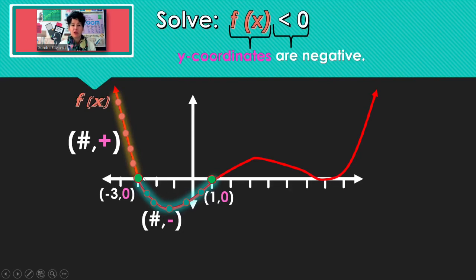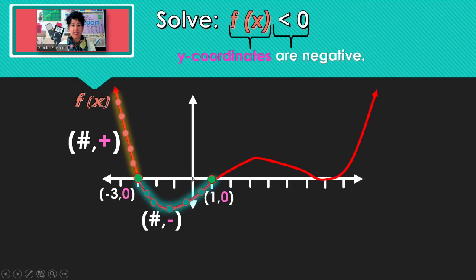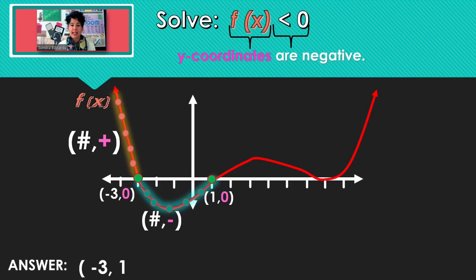If you substitute an x-value — not negative 3, but something bigger than negative 3, like negative 2.99999 — it's going to generate a negative y-coordinate. So not negative 3, but all the x's after that, until we get to x equals 1. But when I plug in x equals 1, it doesn't work. So my solution is negative 3, not including it, through 1, not including it, using parentheses.